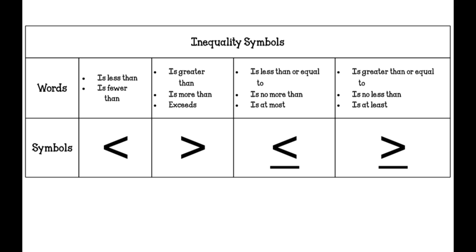The less than or equal to symbol has a line underneath it — think of it as half of an equal sign. Keywords for it are 'is no more than' or 'is at most.' Greater than or equal to uses 'is no less than' or 'is at least.' To remember which symbol is less than, use my left-handed trick: make an L with your left hand and tilt it — that's the less than symbol.